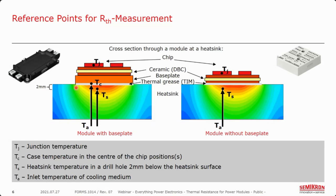If we drilled another hole from the bottom but stopped within 2 millimeters from the surface of the heat sink, we would have the heat sink, or sink, temperature T sub S. We then have the heat sink itself and the temperature of the coolant flowing across it — usually air or a water-ethylene glycol mix. We refer to the temperature of this coolant as it enters the heat sink prior to being heated as the ambient temperature, T sub A.